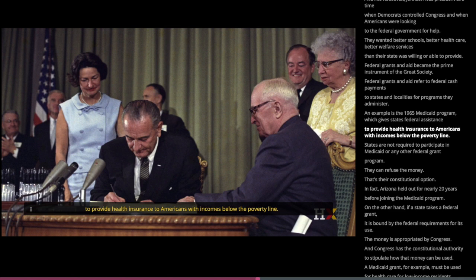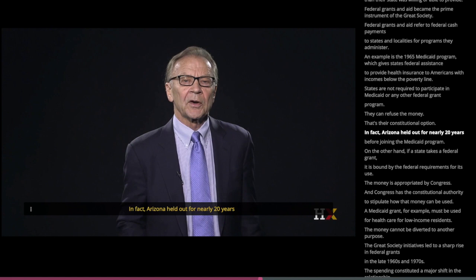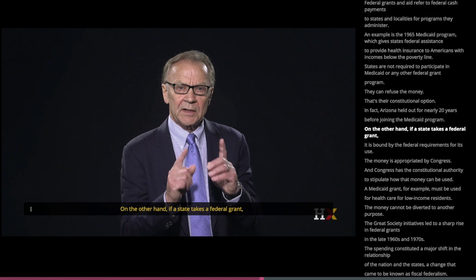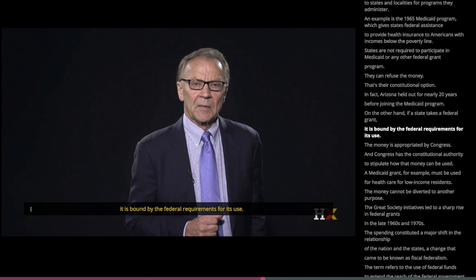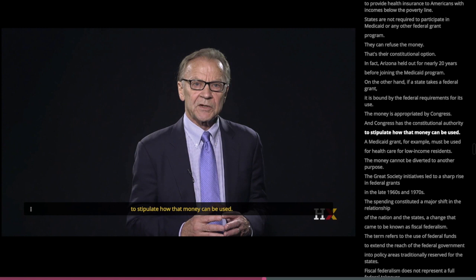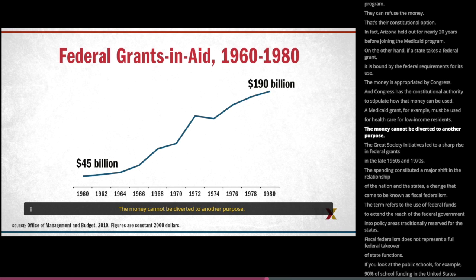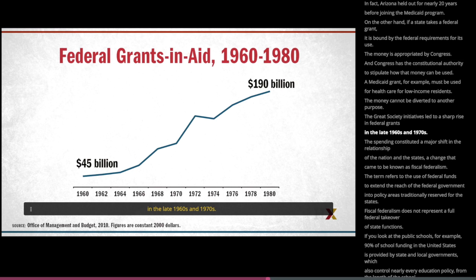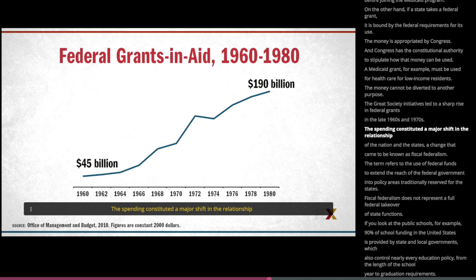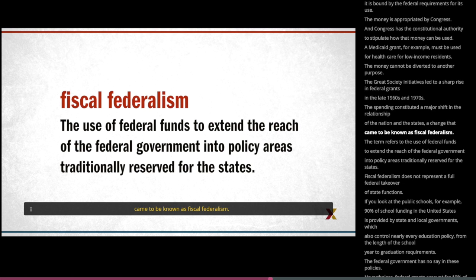States are not required to participate in Medicaid or any other federal grant program — they can refuse the money; that's their constitutional option. In fact, Arizona held out for nearly 20 years before joining Medicaid. On the other hand, if a state takes a federal grant, it is bound by the federal requirements for its use. The money is appropriated by Congress, and Congress has the constitutional authority to stipulate how that money can be used. A Medicaid grant, for example, must be used for health care for low-income residents — the money cannot be diverted to another purpose. The Great Society initiatives led to a sharp rise in federal grants in the late 1960s and 1970s, constituting a major shift in the relationship between the nation and the states, a change that came to be known as fiscal federalism.